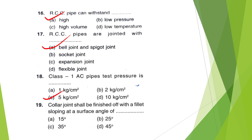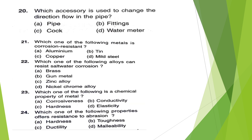The answer is option C — 5 kg per centimeter square. The collar joint shall be finished off with a fillet sloping at the surface angle of — 15, 25, 35, or 45 degrees? The answer is option D — 45 degrees.